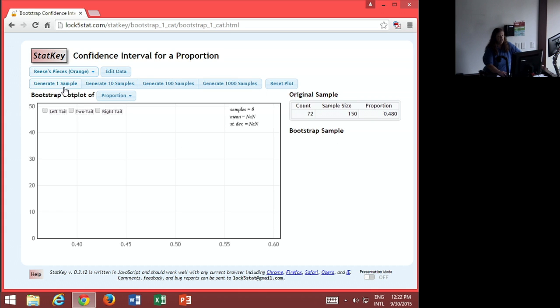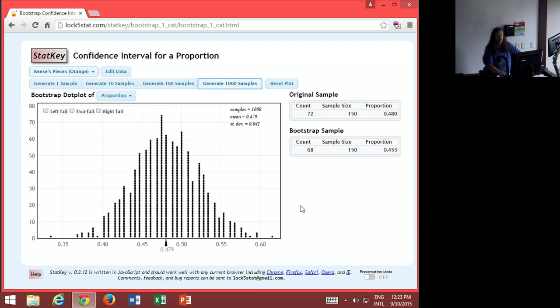Now, we could do one sample, 10, 100, or 1000. Let's do 1000. Okay, now we have 1000 samples from this original sample.